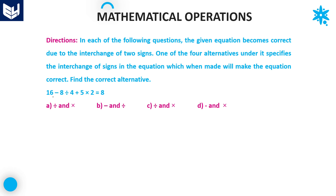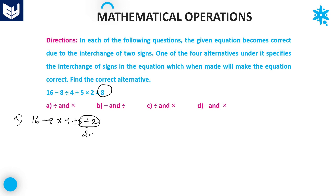Let's move on to the next question. The expression is: 16 - 8 ÷ 4 + 5 × 2, and the resultant answer should be 8. For option A, divided-by and multiplication are interchanged: 16 - 8 × 4 + 5 ÷ 2. First priority is division: 5 ÷ 2 = 2.5. Then multiplication: 8 × 4 = 32. So 16 - 32 + 2.5 — you will not get 8. Option A is eliminated.